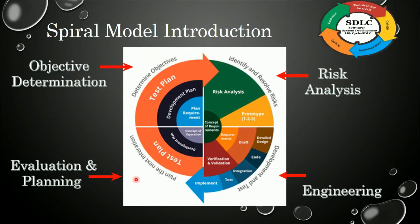This is the spiral model diagram. The first phase of the spiral model is evaluation and planning. In this phase, all operations are evaluated and planned to implement onto the development phases to develop the systems. The second phase is objective determination.